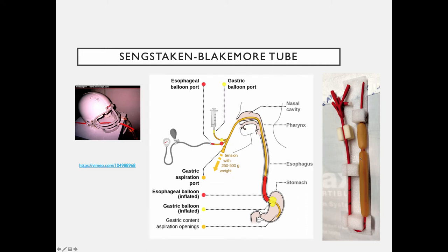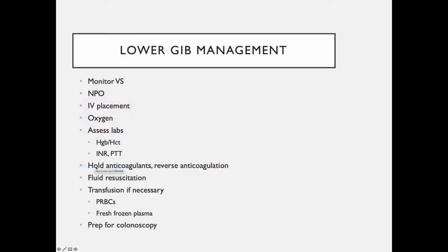The problem with these balloons is that when inflated, they tend to migrate — like a watermelon seed — straight down into the stomach. That's what the football helmet is for. We attach the tube, once it's in the nose, to the football helmet mask, and that keeps traction on the Minnesota tube so it can't come out. There's a video here for you to click on to see more details.